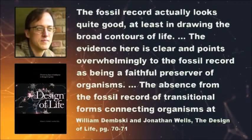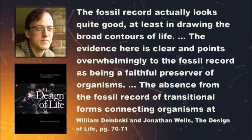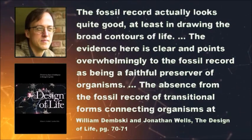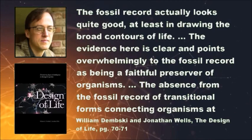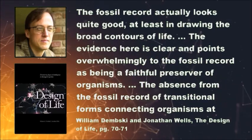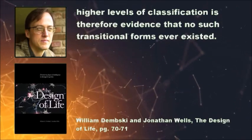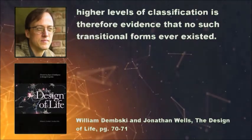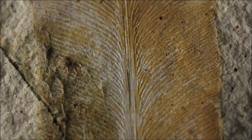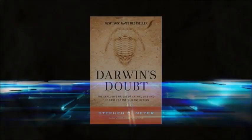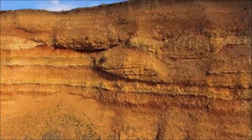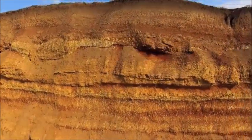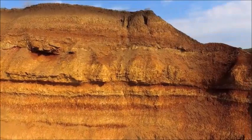William Dembski and Jonathan Wells say: 'The fossil record actually looks quite good, at least in drawing the broad contours of life. The evidence here is clear and points overwhelmingly to the fossil record as being a faithful preserver of organisms. The absence from the fossil record of transitional forms connecting organisms at higher levels of classification is therefore evidence that no such transitional forms ever existed.' Thus, while the fossil record is imperfect, it is adequate to test common ancestry. The problem is that the fossil record doesn't show any evolutionary precursors to the major life forms. The simplest and most parsimonious interpretation is that the reason we don't see any evolutionary precursors is because they simply never existed in the first place.